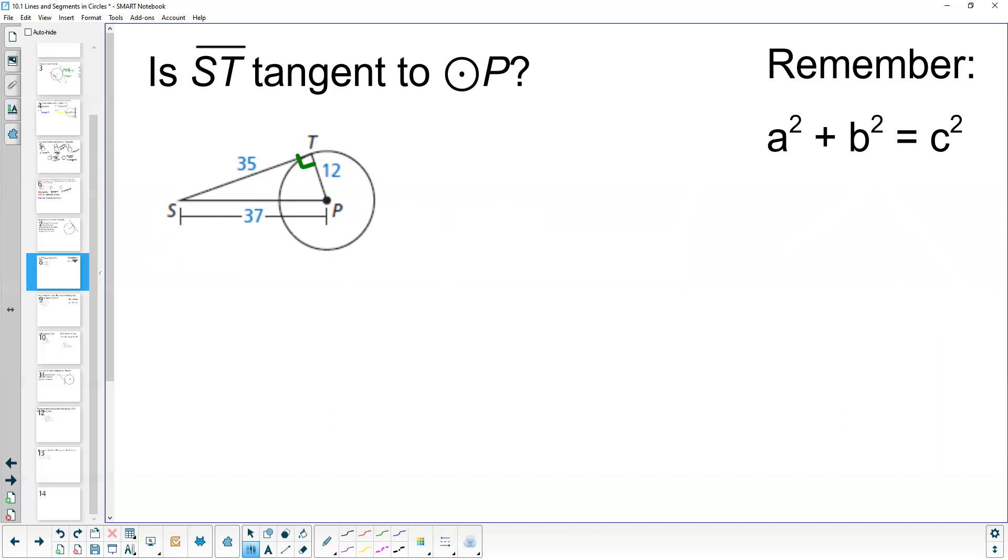This is going to be a leg, that 12. So we've got 12² plus our other leg, 35², should equal the hypotenuse, 37². Is 12, 35, 37 a Pythagorean triple? Let's find out. 12² equals 144, plus 35² equals 1,225. Is that equal to 37², which is 1,369?